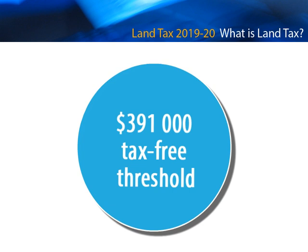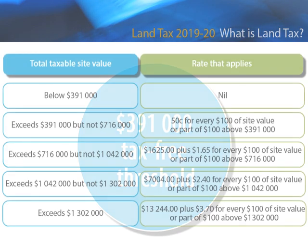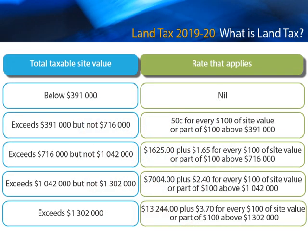A tax-free threshold applies to each land tax ownership. This means if the aggregated site value of all taxable properties in an ownership is below the threshold, land tax will not be applied. The current tax-free threshold is shown. Land tax is calculated using a progressive rate structure which takes into account the tax-free threshold. The current land tax rates are shown. These are subject to change each financial year and will increase if there has been an overall increase in land values in South Australia.